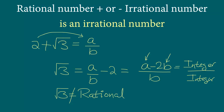Our assumption that 2 plus square root 3 is a rational number — that assumption is incorrect — and hence we say that 2 plus square root 3 is actually an irrational number.